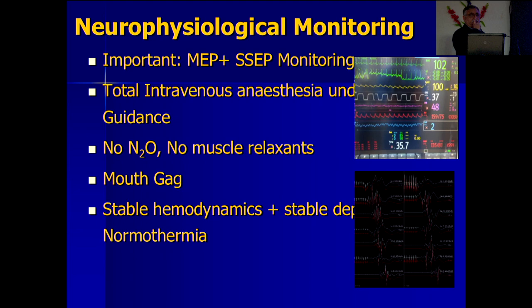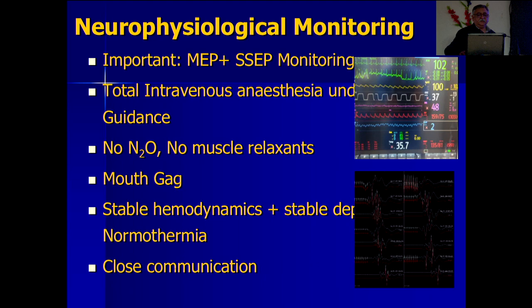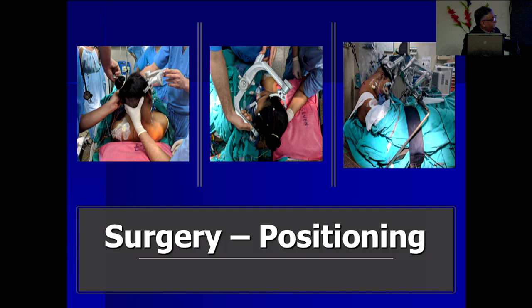The only way to intubate was through the nose, and only one nostril was clear because of the deviation of the neck. Our anesthetists were very good — they managed to intubate through that one nostril, and nasotracheal intubation helped us perform this surgery.